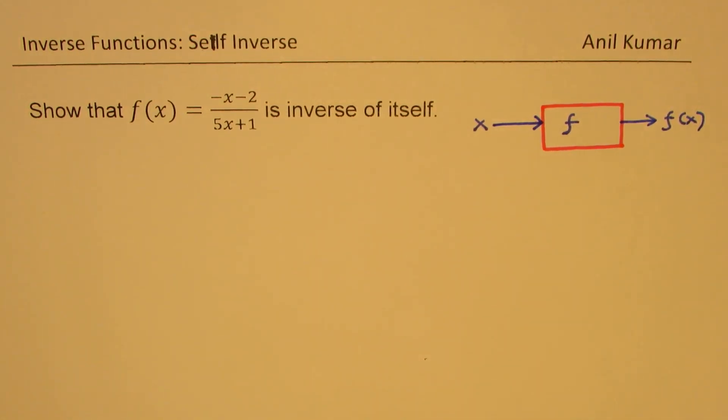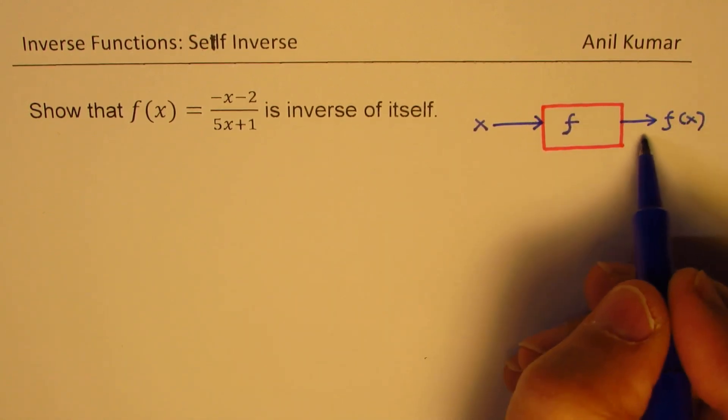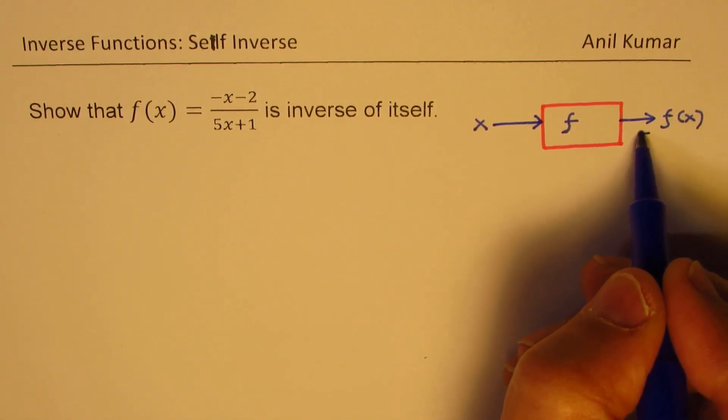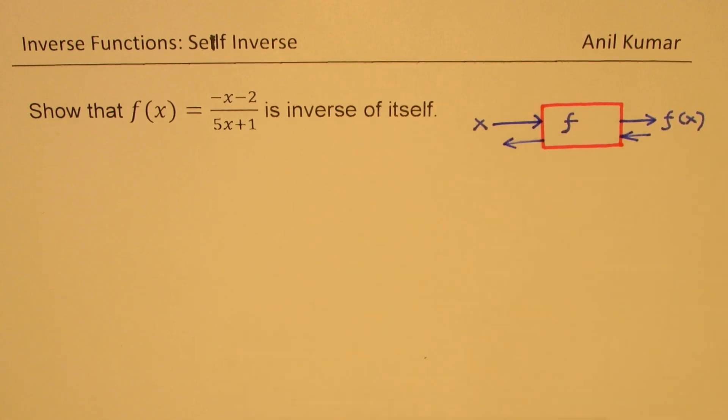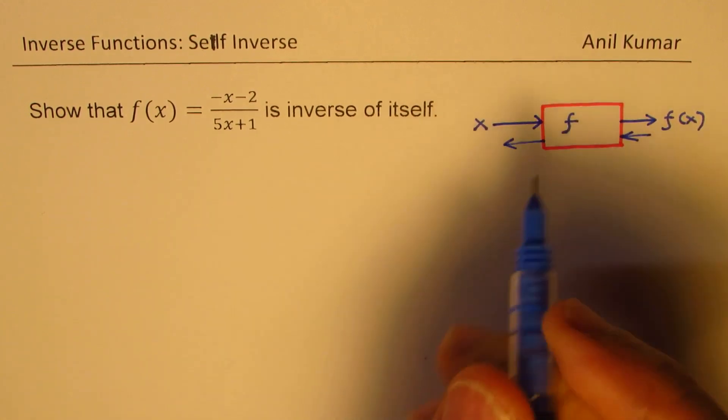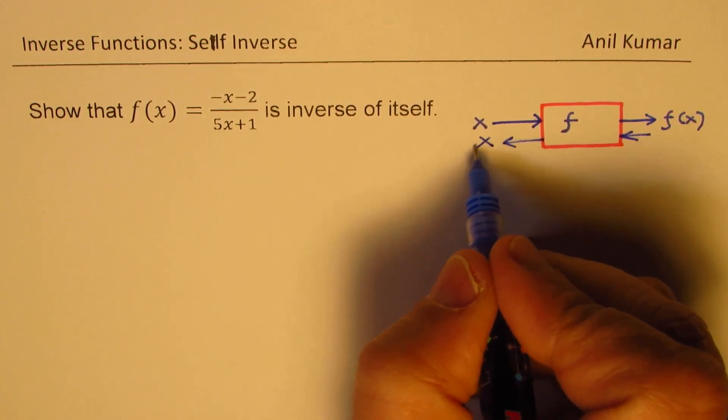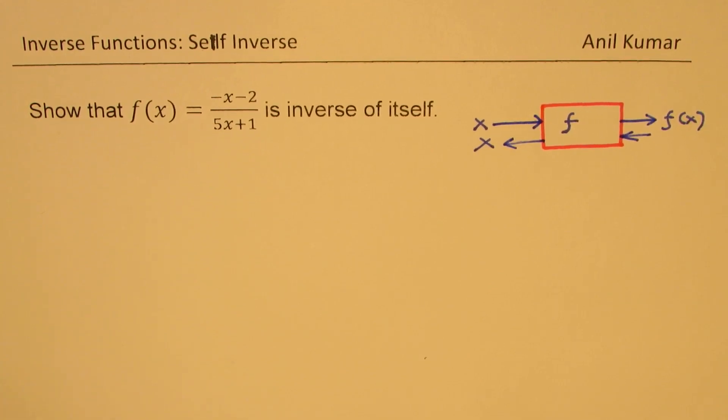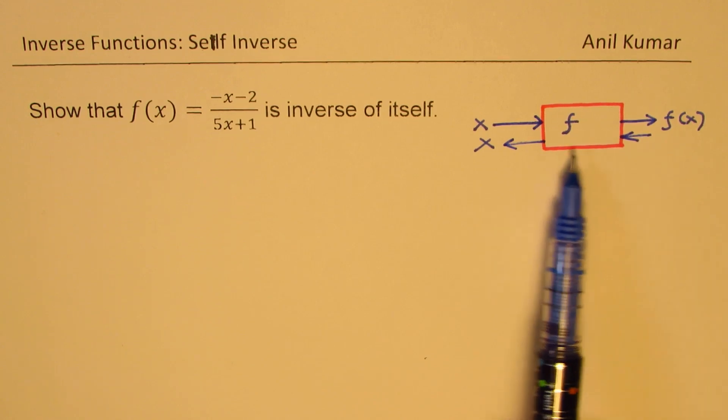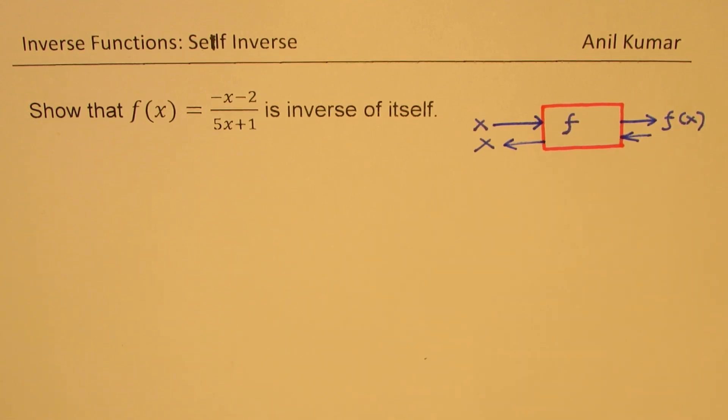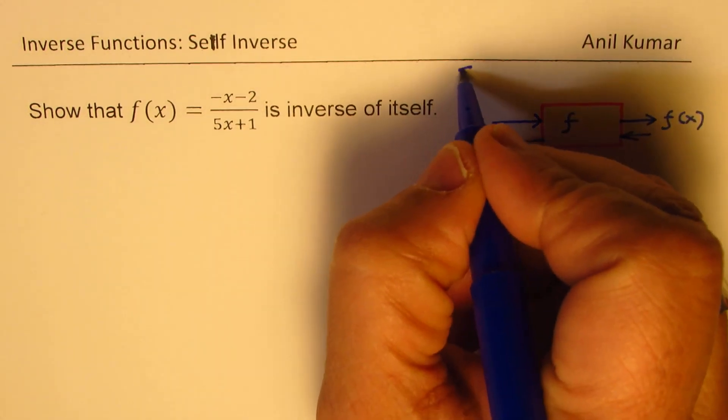Now, inverse will do the reverse operation. And that is to say that when I feed back this value, whatever we got here back to the function, then the same function should return me what I had fed in. That is to say it will give me back the value of x. Now, if that happens using only one function itself, then we call this as self-inverse. So this is the concept of self-inverse.